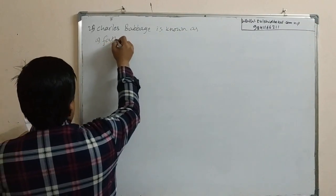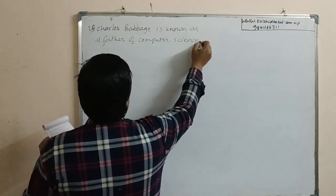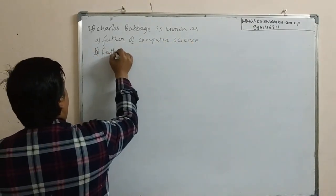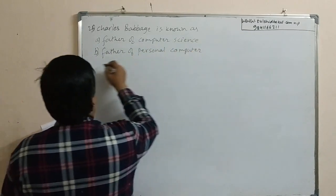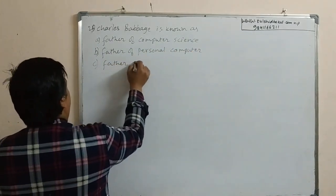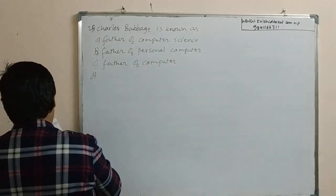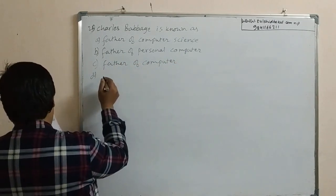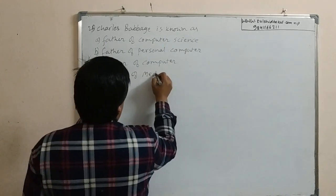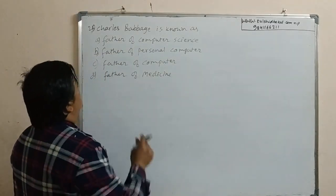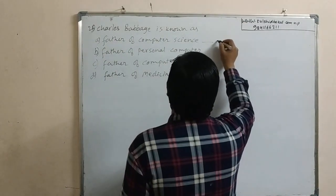The next question: this person is known as Option A, father of computer science; Option B, father of personal computer; Option C, father of computer; Option D, father of medicine. The father of computer science, or father of modern computer, is Alan Turing.